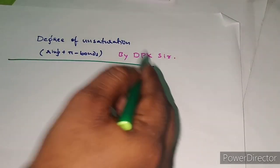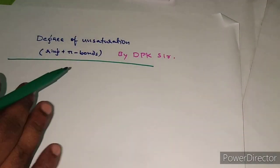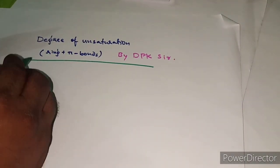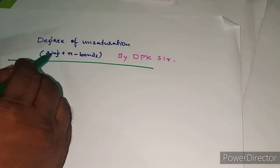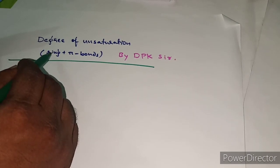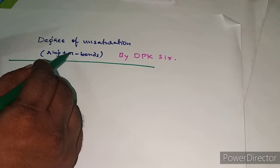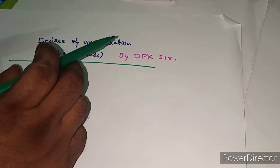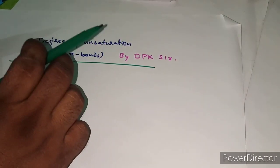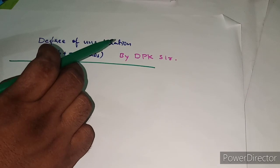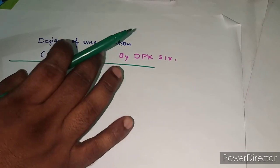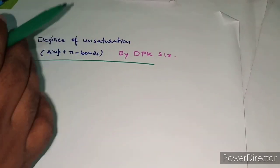Degree of unsaturation is very simple — it is nothing but the number of rings and pi bonds in a compound. It simply explains about the pi bonds and whether cyclic rings are present or pi bonds are present. Let's see how to calculate it.